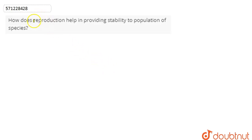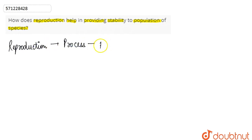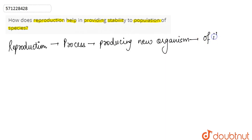In this question, we are asked how does reproduction help in providing stability to the population of a species. Reproduction is a process of producing young ones — new organisms of its own type. Basically, it is a process in which the parent produces their progeny.